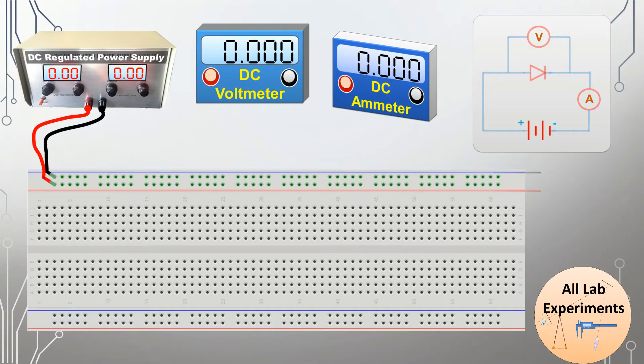You can notice that the intensity of the battery symbol in this circuit has changed — this is an indication that we have successfully connected our power supply.